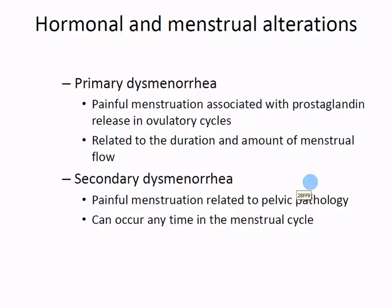Dysmenorrhea refers to a dysfunctional or uncomfortable menstrual cycle - painful periods. Primary dysmenorrhea is associated with prostaglandin release. When menstruation starts, all that tissue dying off inside the uterine lining releases tons of prostaglandins, and with many prostaglandins released, it causes very uncomfortable pain. So primary dysmenorrhea is primarily the uterus itself causing the pain.